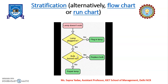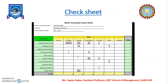Now move on to the next tool — the check sheet. Check sheets are used for organizing and collecting data. Researchers generally use this tool to collect data because it is very convenient. On the y-axis there are defects and on the x-axis there are days or dates. Each line represents the occurrence of a particular defect on a given day, and a blank cell represents no occurrence of that defect on that day.